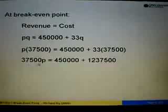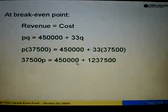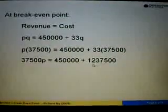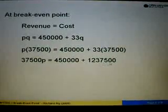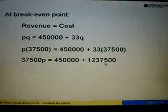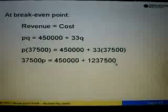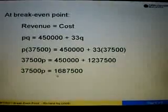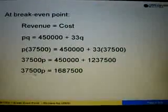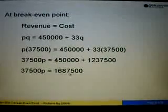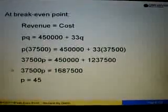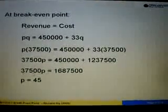Simplifying: on the left-hand side we have 37,500P. On the right-hand side, 33 times 37,500 equals 1,237,500. So 450,000 plus 1,237,500 gives us 1,687,500. Therefore, 37,500P equals 1,687,500, so P equals 1,687,500 divided by 37,500.